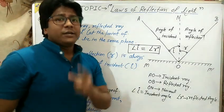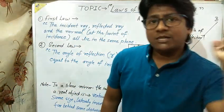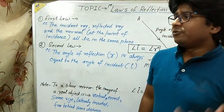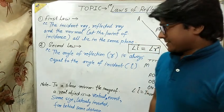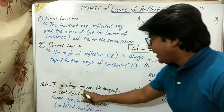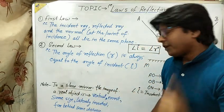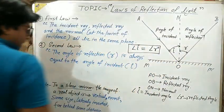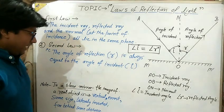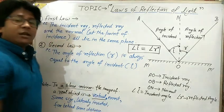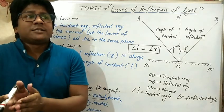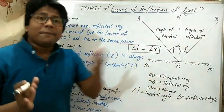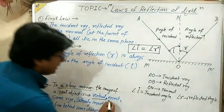One point to remember about the image constructed by a plane mirror. In a plane mirror, the image of a real object is virtual — obviously, because its position is behind the mirror. The image is erect.